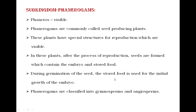The embryo and stored food are the two components clearly seen in Phanerogams. During germination of the seed, the stored food is used for the initial growth of the embryo. When we sow a seed in soil, the energy requirement for germination is fulfilled by stored food, which is nothing but the cotyledons. Phanerogams are classified into Gymnosperms and Angiosperms on the basis of position of seed — whether the seed is inside a fruit or without a fruit.